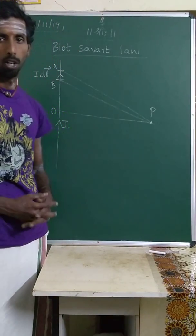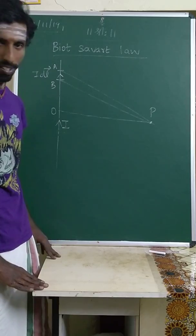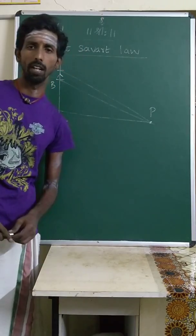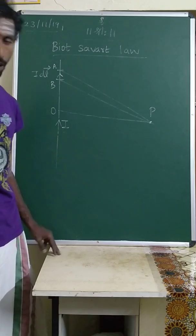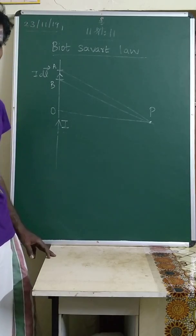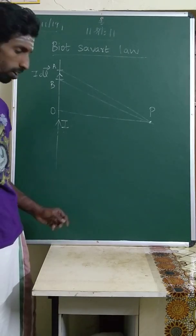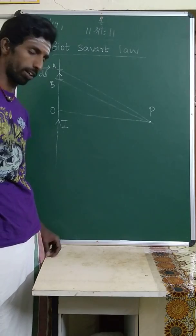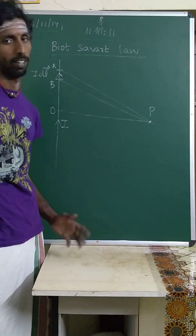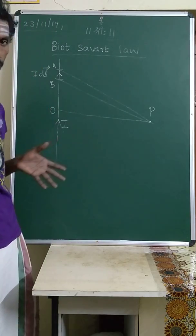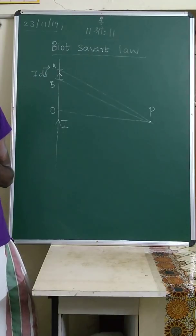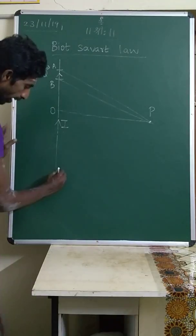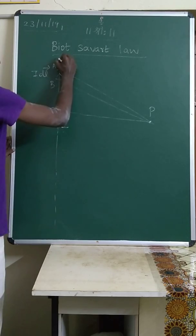Good evening students. Today we are going to discuss the Biot-Savart law derivation for a straight infinite current-carrying wire. In the previous class we discussed Biot-Savart law in vector form, so now with the help of that we are going to start this. Let us consider an infinite straight current-carrying wire.